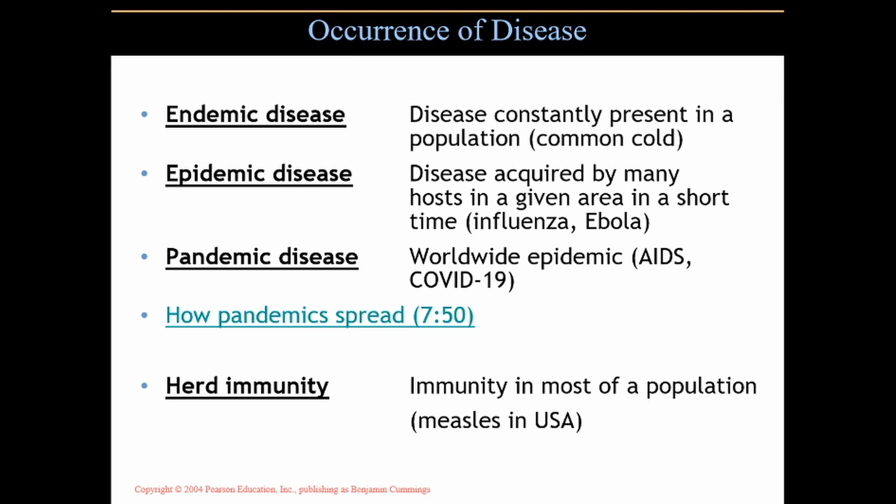An epidemic disease is acquired by many hosts in a given area in a short time. Epidemics pop up around the globe every year from influenza. Ebola, for example — there's an outbreak happening right now — is of great concern in Africa. It's constantly being monitored so that epidemic levels do not reach the next category: pandemic.